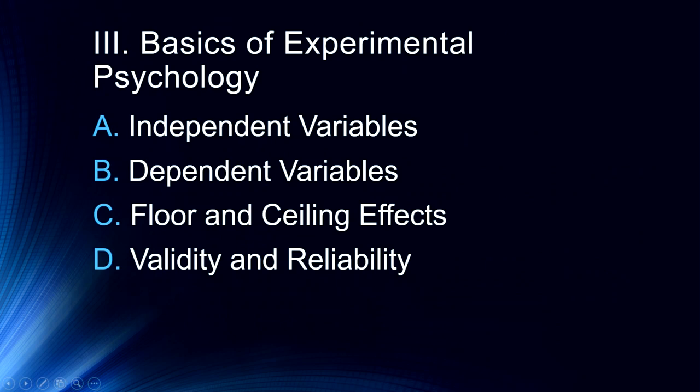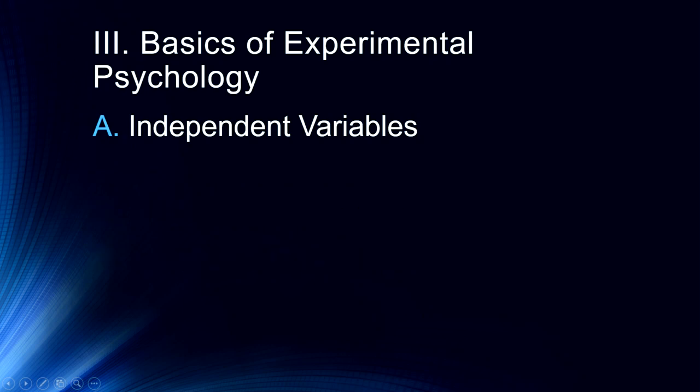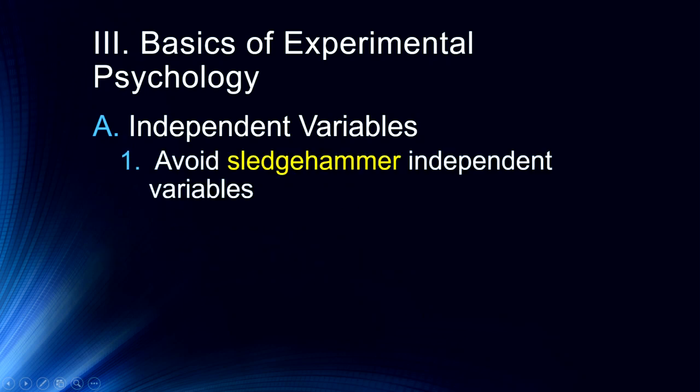I want to spend a few minutes talking about both independent and dependent variables, floor and ceiling effects, and then validity and reliability. An independent variable is, of course, something that we're manipulating. We talk about an independent variable having multiple levels — an independent variable has to have at least two levels. For example, if we had a drug and placebo condition, we might end up with two levels of a single independent variable.